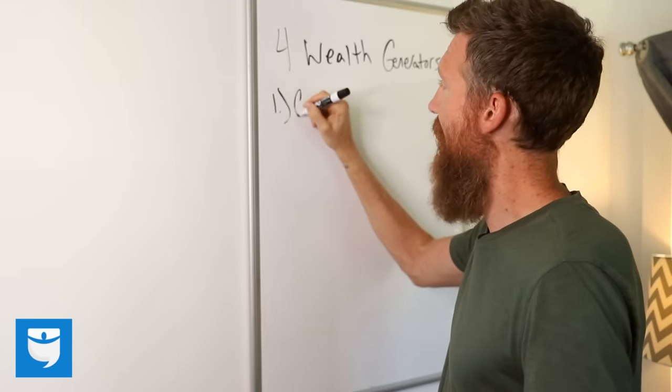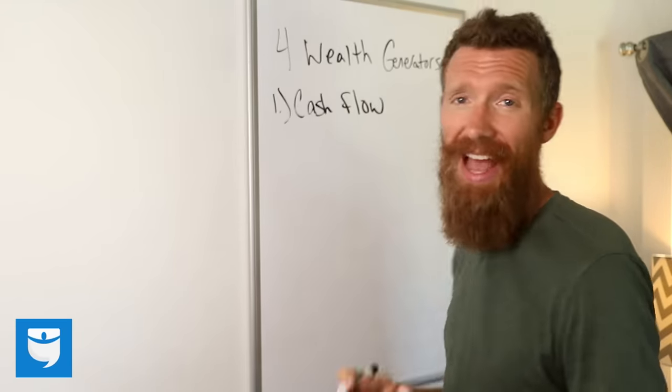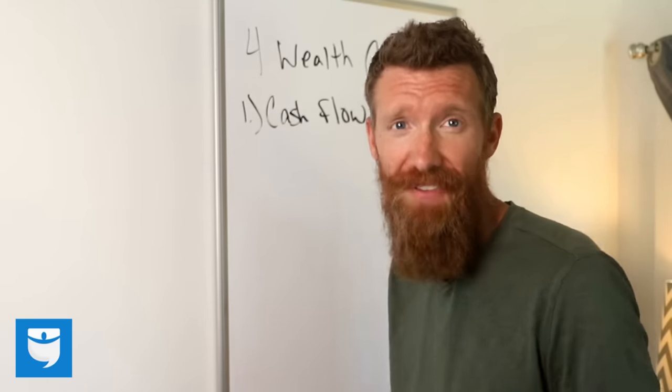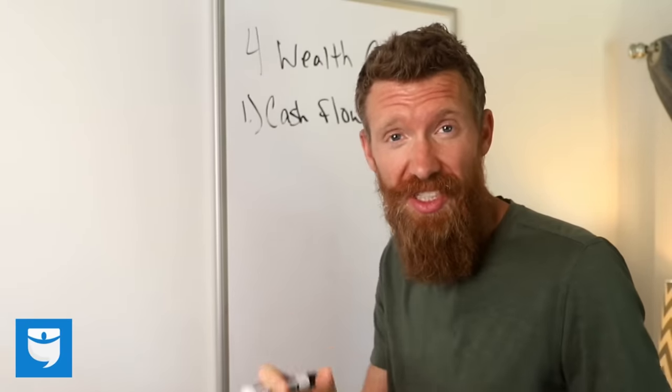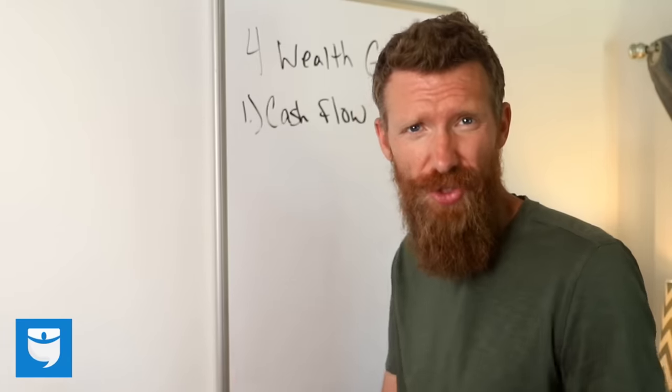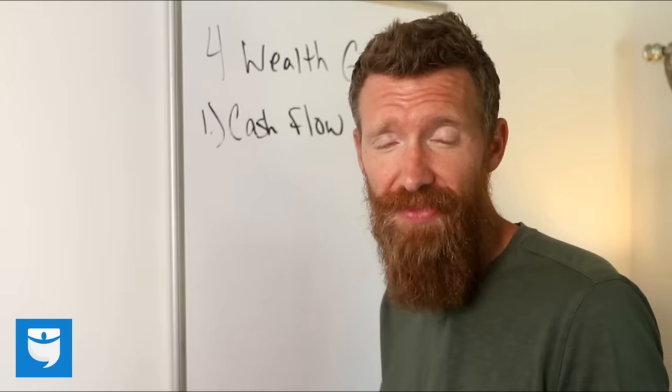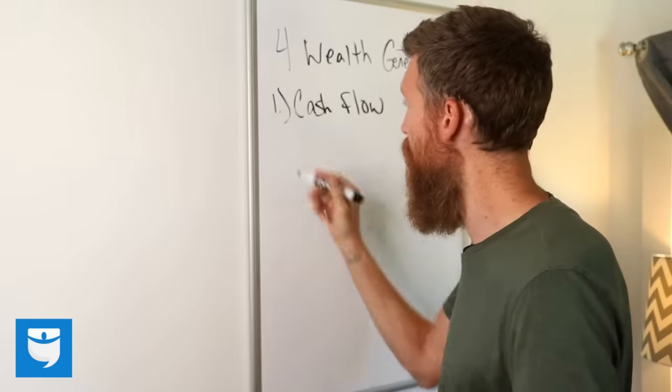Number one is going to be cash flow. So the first thing, cash flow, that's the extra money every month that a property produces in profit. It's income minus expenses. The key to that though is understanding expenses because they're kind of tricky, right? Make sure you get all the expenses when you calculate it. But basically this is just the money you're left with in your pocket at the end of every month.